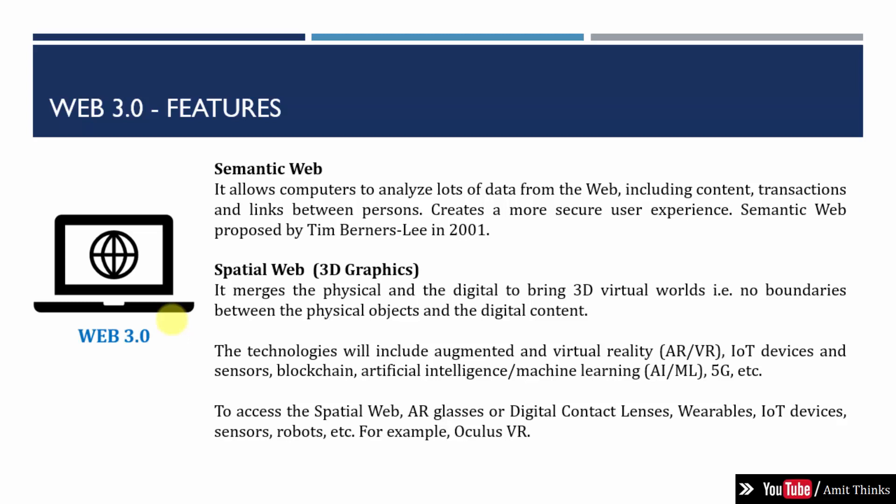The semantic web aims to create a more secure environment and better user experience. It was proposed by Tim Berners-Lee in 2001. Another feature is the spatial web, which is related to 3D graphics. Imagine a place where all physical and digital 3D virtual worlds exist without any boundaries — no boundary between physical objects and digital content. This includes AR, VR, IoT devices, artificial intelligence, machine learning, 5G, blockchain, sensors, and many other concepts. All these technologies will be part of Web 3.0.